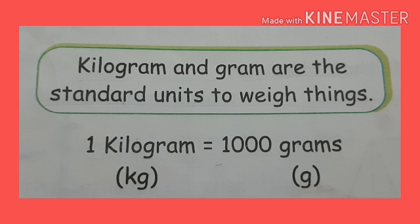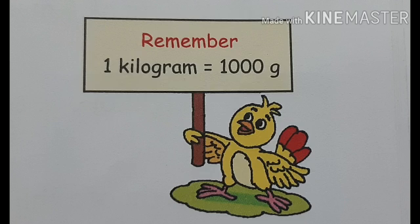Kilogram and gram are the standard units to weigh things. 1 kilogram is equal to 1000 grams, or 1000 grams is equal to 1 kilogram. You have to remember 1 kilogram is equal to 1000 grams.